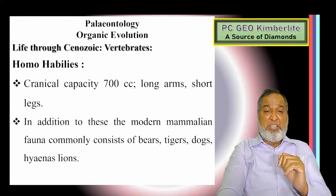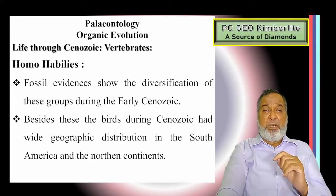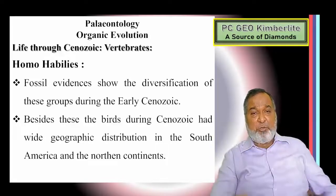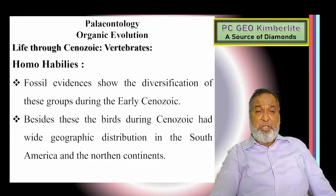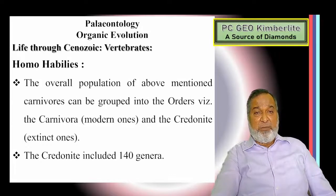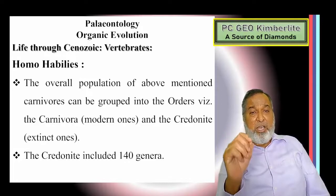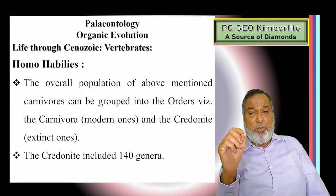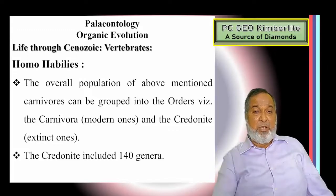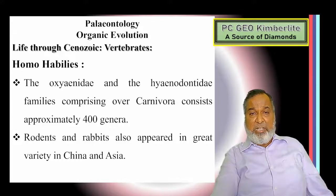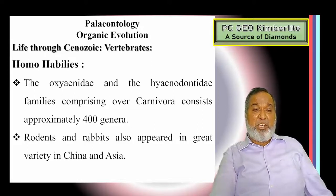Modern mammalian fauna commonly consists of bears, tigers, dogs, hyenas, and lions. Fossil evidence shows the diversification of these groups during the early Cenozoic. Carnivores can be grouped into the Carnivora — modern ones — and the Creodonta, which is extinct. Creodonta includes 114 genera. The families Oxyaenidae and Hyaenodontidae comprising the Carnivora consist of approximately 400 genera. Rodents and rabbits also appear in great variety in China and Asia.